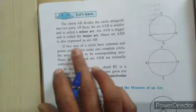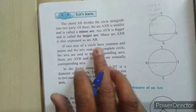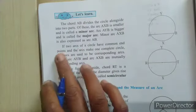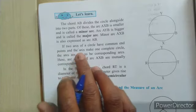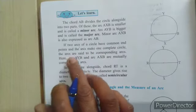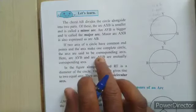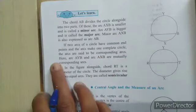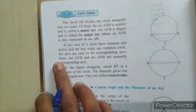If two arcs of a circle have common endpoints and together the arcs make one complete circle, the arcs are said to be corresponding arcs.